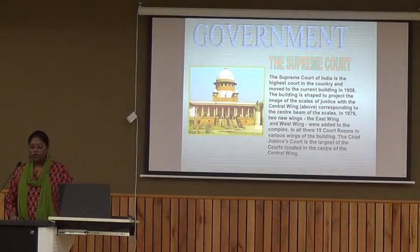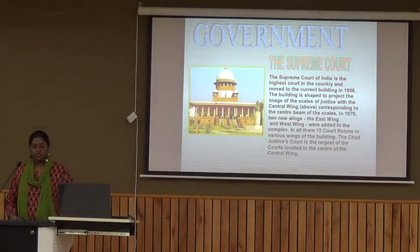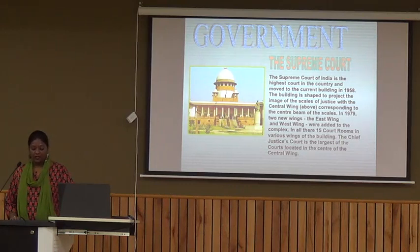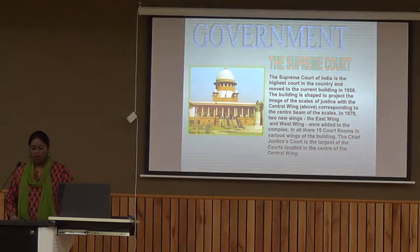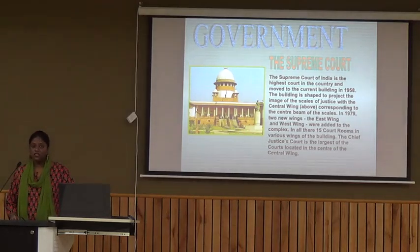The Supreme Court moved to its current building in 1958. The building is shaped to project the image of the scales of justice, with the central wing corresponding to the center beam of the scales. In 1979, two new wings — the East Wing and West Wing — were added to the complex. There are 15 courtrooms in various wings of the building, and the Chief Justice's Court is the largest, located in the center of the central wing.